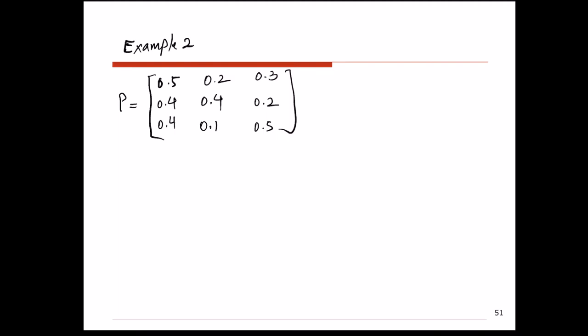We want to find the steady-state properties in this system. The first thing to check before calculating steady-state properties is whether this Markov chain is ergodic, because steady-state properties exist only for ergodic Markov chains. The three conditions are: all states are recurrent, all states communicate, and all states are aperiodic. I recommend pausing the video to check if this Markov chain is ergodic.